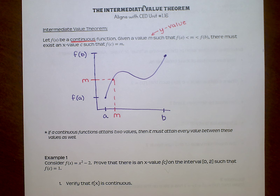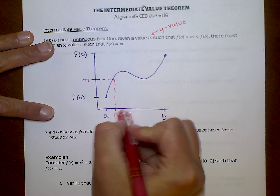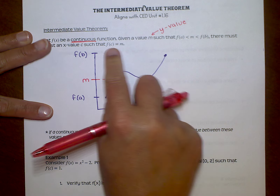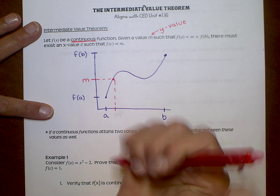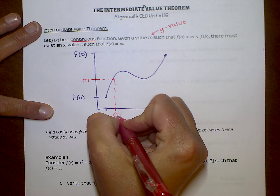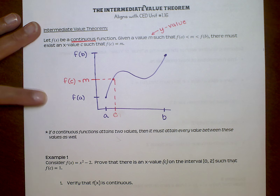If a continuous function attains two Y values, then it must attain every value in between those if this function is truly continuous. I want to point out what this theorem does not say. There must exist an X value C such that F of C is equal to M. So this is C, and F of C is equal to this M value.